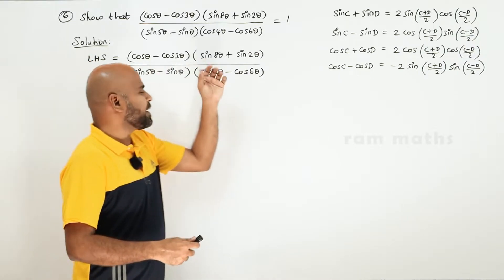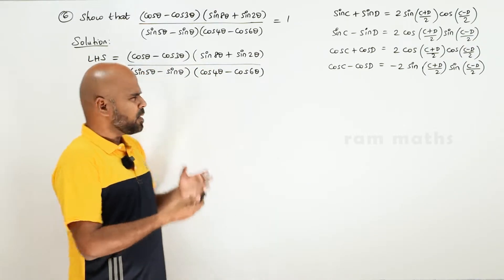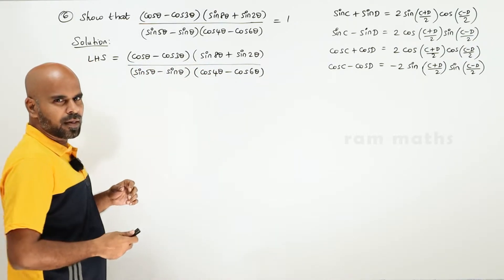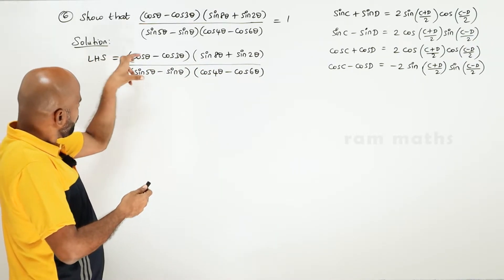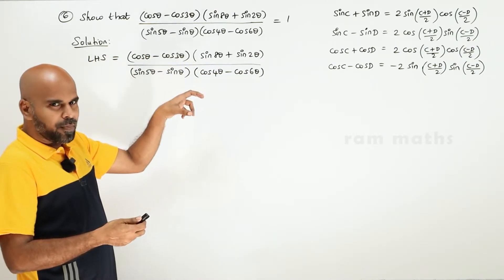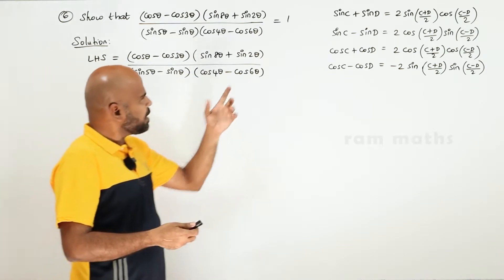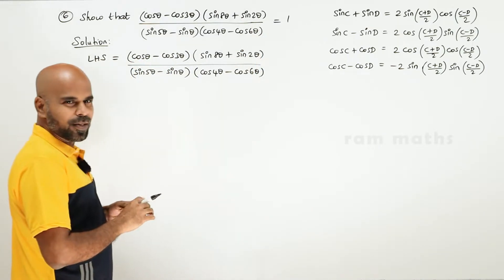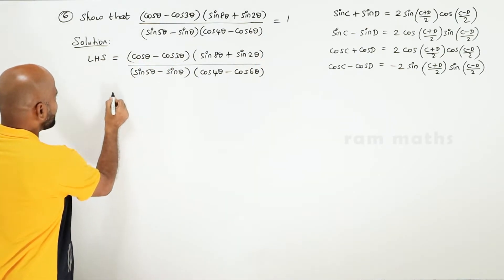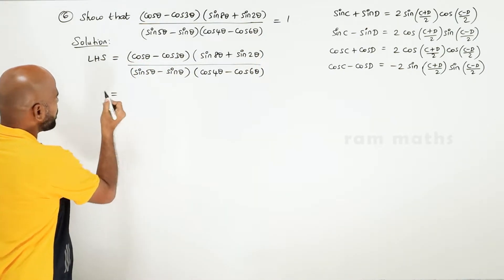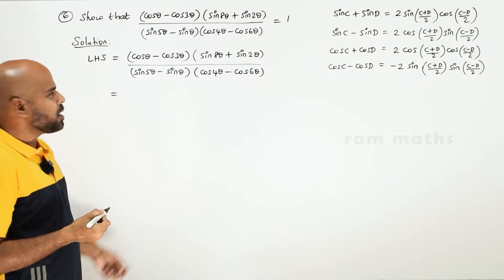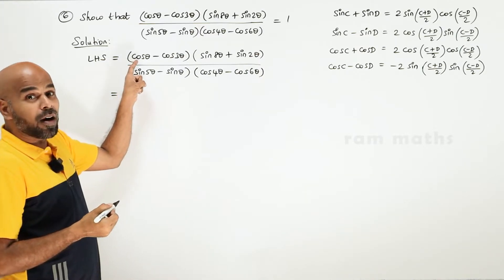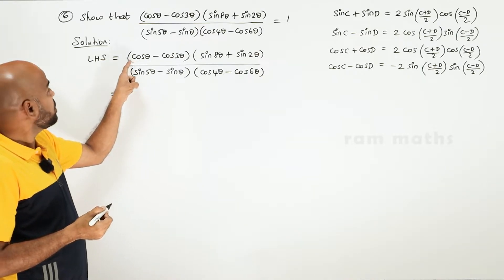Let us consider this problem. Very simple — one formula applied and the answer will come. Forming it: cos C minus cos D.